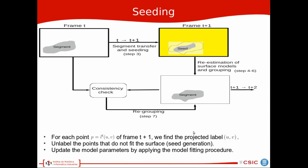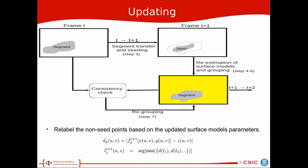Once we have determined the model parameters, we project the labeling from current frame to the next frame and unlabel the points that do not fit the surface. This is how we generate the seeds. Once we have generated the seed we update the model parameters by applying the model fitting procedure.